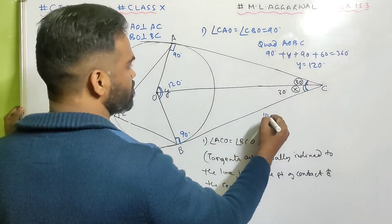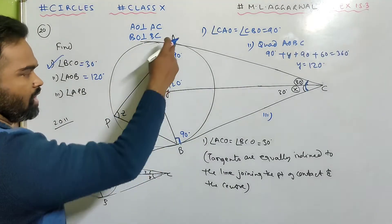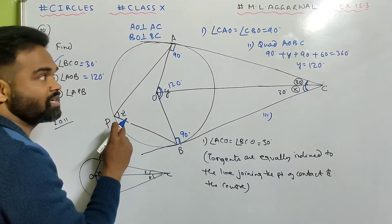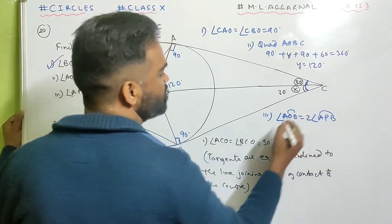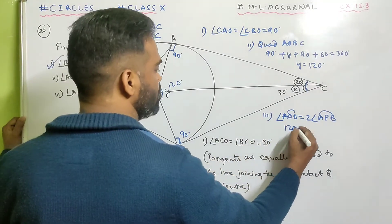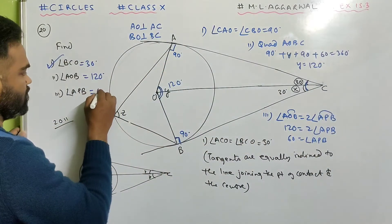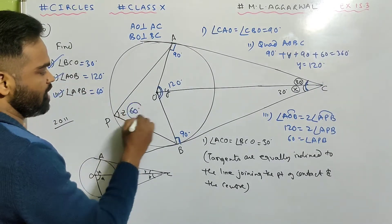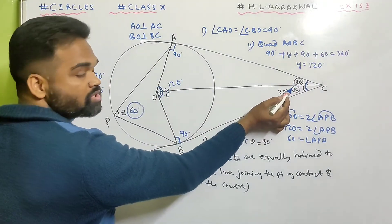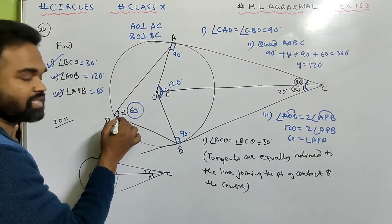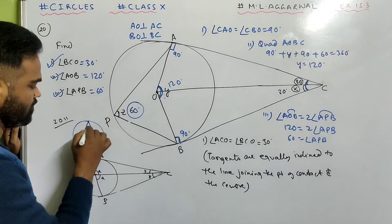Now for the third part — angle APB. Angle at the center is twice the angle at circumference. AOB is from the same segment as APB, so angle AOB equals twice angle APB. 120 equals twice angle APB, so angle APB equals 60 degrees.